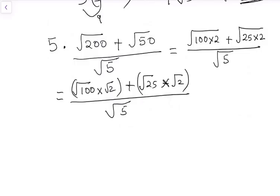Now we solve further. Square root of 100 is 10, that's 10 root 2. Square root of 25 is 5, 5 root 2, over square root of 5.